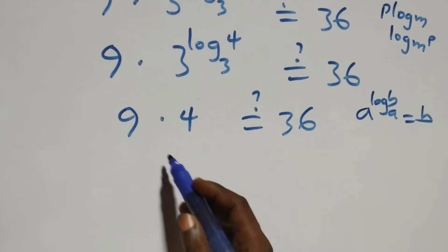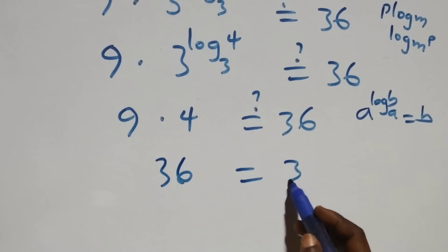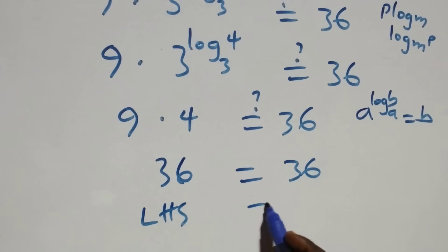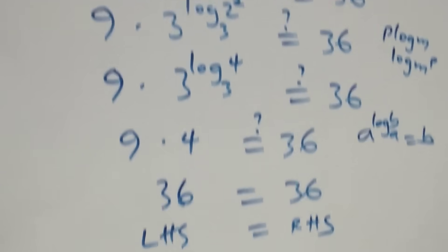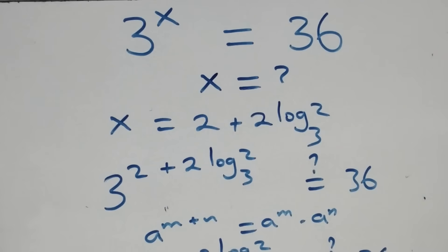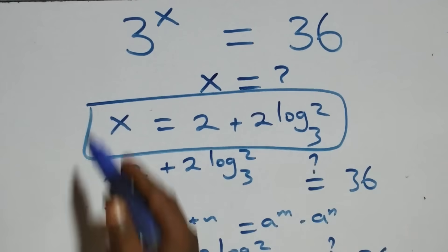9 times 4 gives us 36, which equals 36 here. We have the left-hand side equals the right-hand side. Therefore, we can conclude that x equals to 2 plus 2 log 2 base 3 satisfies this given problem.